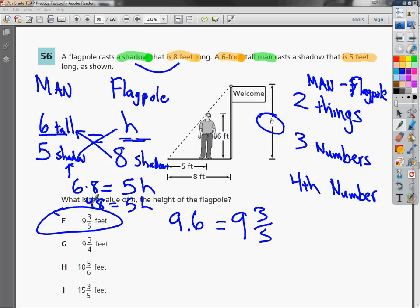So I can say with pretty good confidence, assuming the sun's in the same place when I do all my measurements, that the value of the height of the flagpole is 9 and 3 fifths feet. So my answer choice is F.